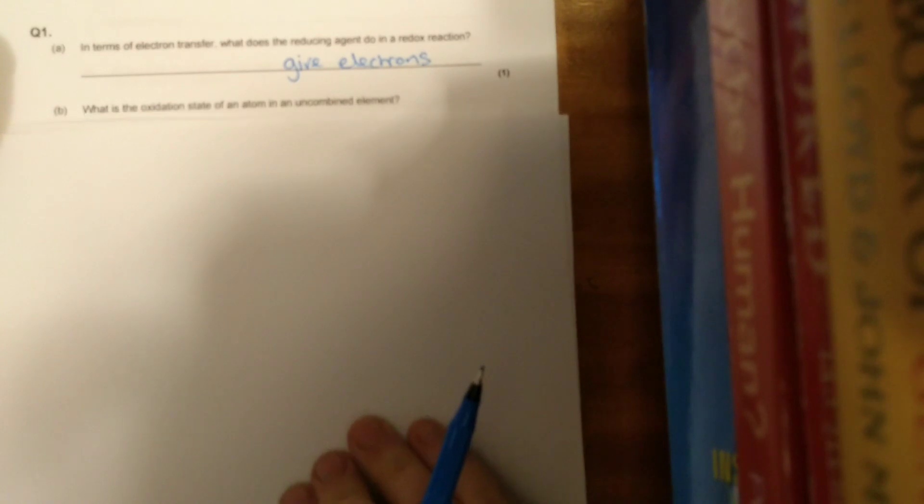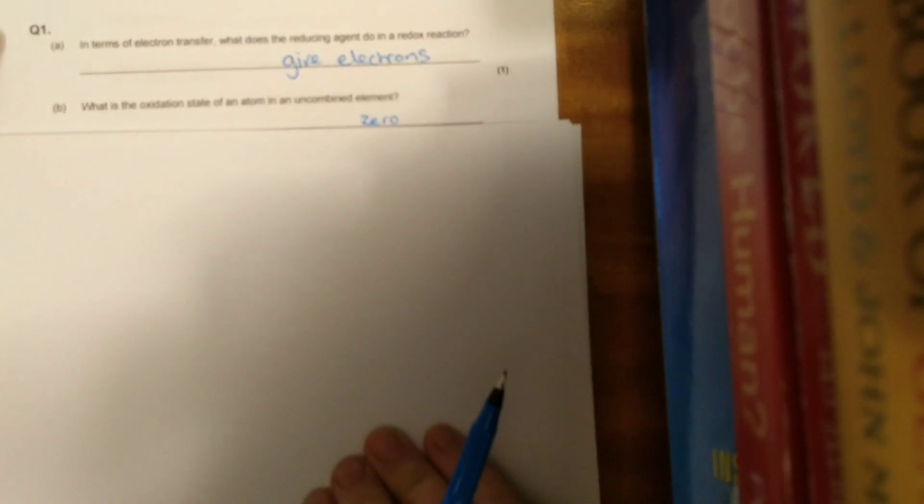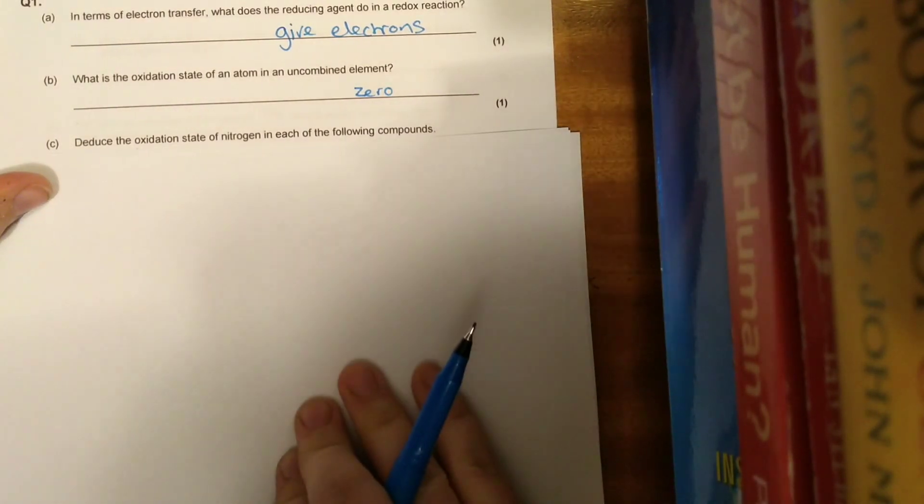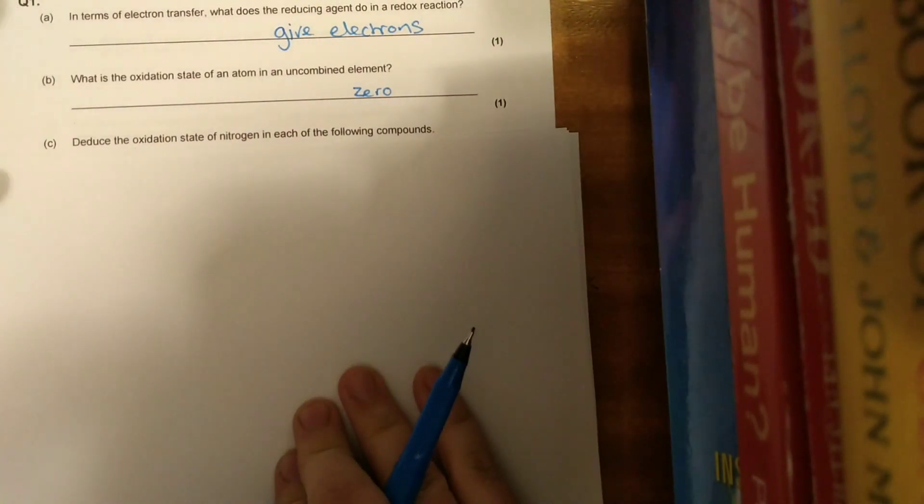In terms of electron transfer, what does the reducing agent do in a redox reaction? We know when we have a reduction, we've got a gain of electrons. Something needs to give those electrons, and that's the reducing agent. So you're looking for the thing which is giving electrons.